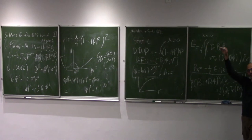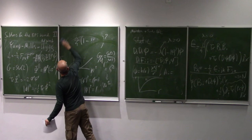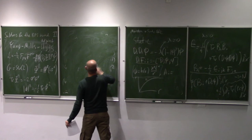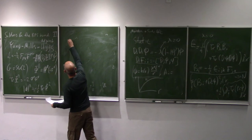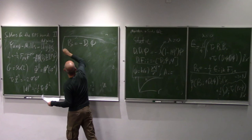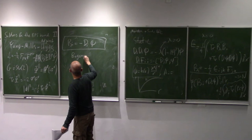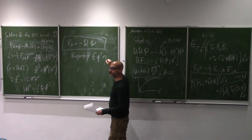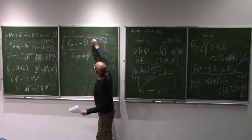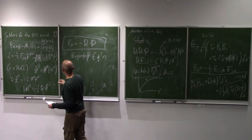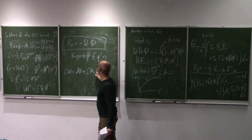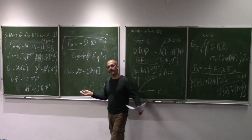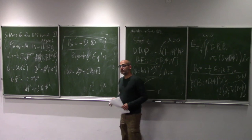The solutions that saturate the bound satisfy the Bogomolny equation: B_i = D_i Φ. So the magnetic field equals the covariant derivative of the Higgs field. This is a covariant derivative — it contains a partial derivative plus a gauge field acting in the adjoint representation. These equations are extremely interesting from a mathematical perspective. You can solve them and find the Prasad-Sommerfield solution.